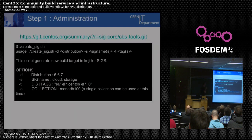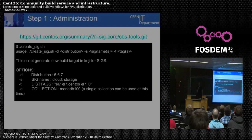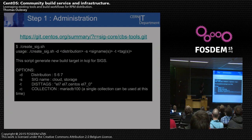For administration, we made a small script to handle all the naming conventions and how to build a new SIG. You can check the code — it's some bash, it's really easy, and you should be able to adapt it to your needs if you want to run Koji in-house. It's available on the CBS tools Git repo, so please connect and have a look.